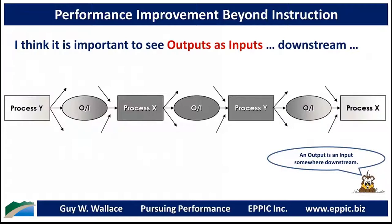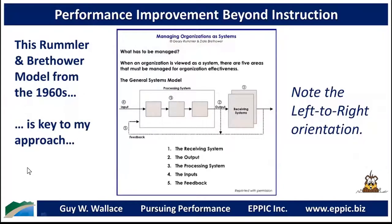One of the important things I learned a long time ago was to think of outputs as inputs — they're inputs downstream. In my graphic, going left to right, process Y's outputs could go in different directions, but it was an output that was an input to the next process step, process X. It's important to always think about what Gilbert called worthy outputs, produced by human behaviors and the environmental resources they had to work with. The worth of an output is judged by the various stakeholders including the downstream customers.